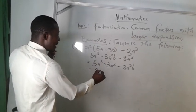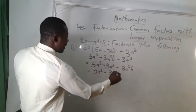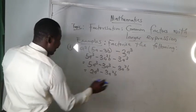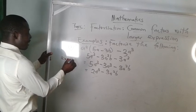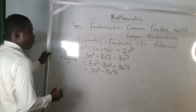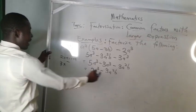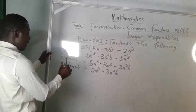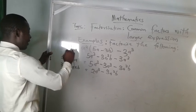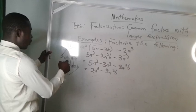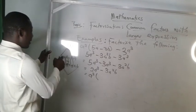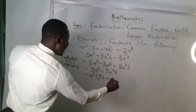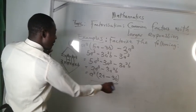Five a cubed minus three a cubed gives us two a cubed, minus three a squared b. Now let's break it down to find the common factor. We have two times a times a times a, minus three times a times a times b. What's common here is a squared. So we factor out a squared into brackets: two a minus three b. There's no further common factor, so this is our final answer.